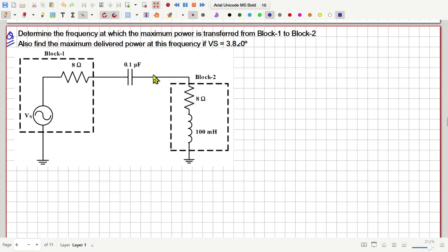If this current is I, then the power consumed by this resistor is I squared into 8 ohm. Now, how much is this current? So if this voltage is V, then V divided by this total impedance is this current.